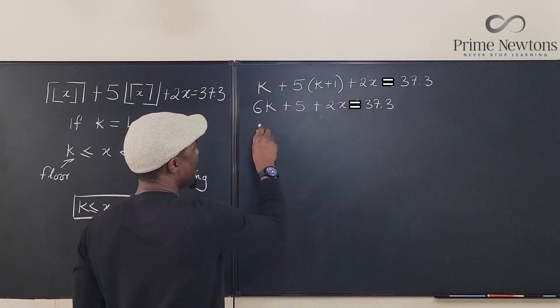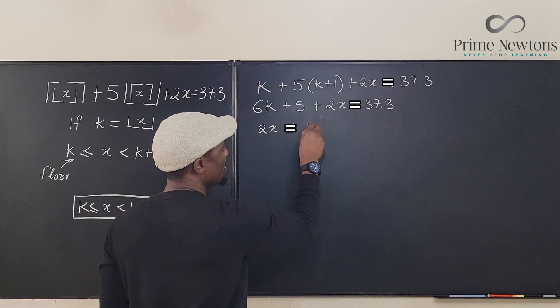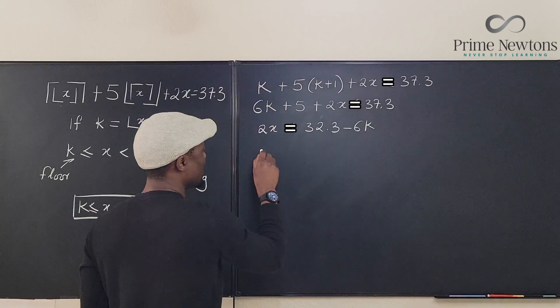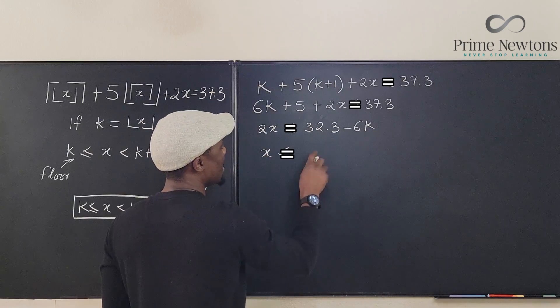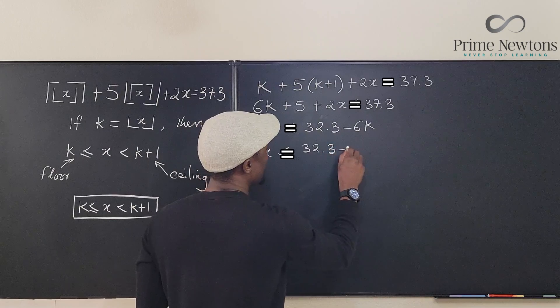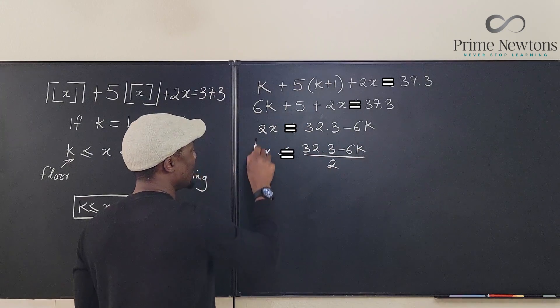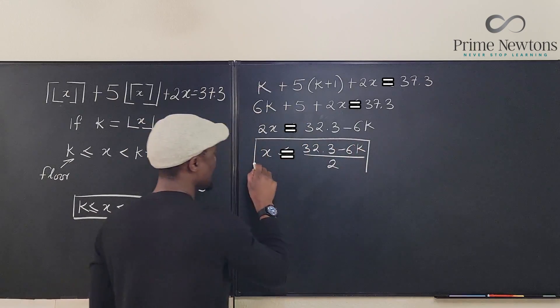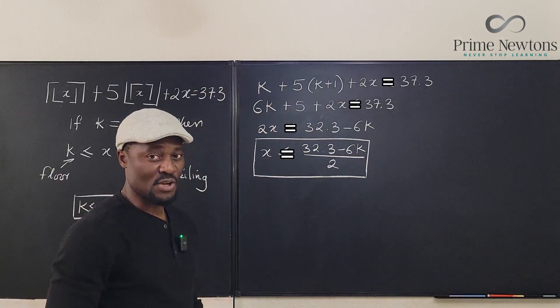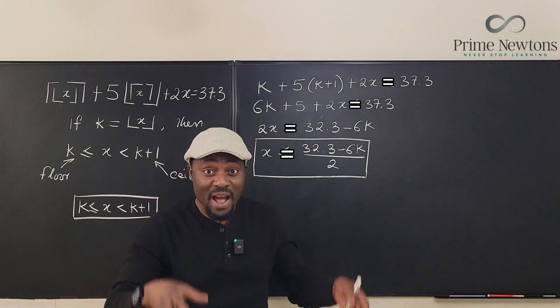If we keep 2x here and move everything over, we're going to end up with 2x equal to, subtract 5 from here, it's going to be 32.3 minus 6k. So that tells you that x equals 32.3 minus 6k divided by 2. This again is another formula that we're going to use.